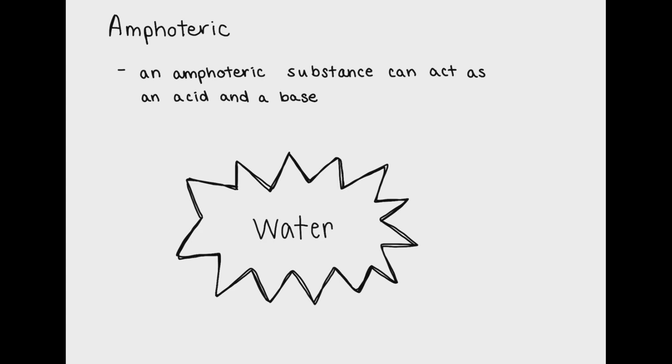A molecule is amphoteric if it can act as both an acid and a base. The most notable amphoteric substance is water. Water can act as either an acid or a base depending on what it's reacting with. For example, if I put a weak base in solution it will react with water and water will act as an acid.